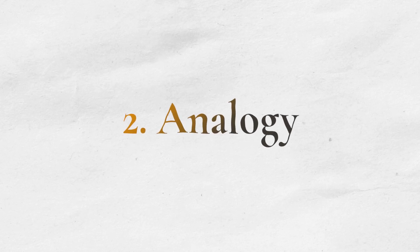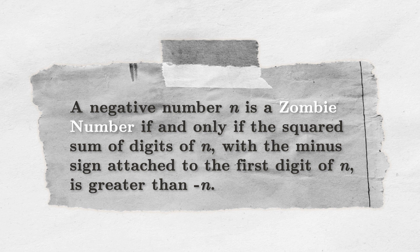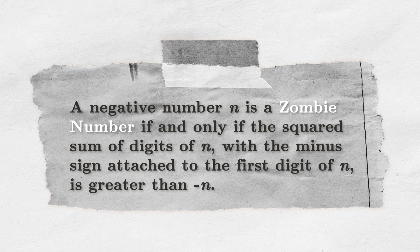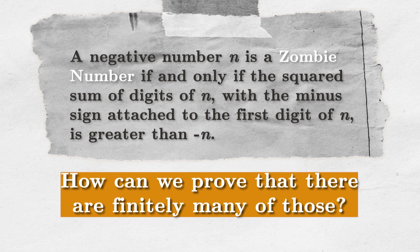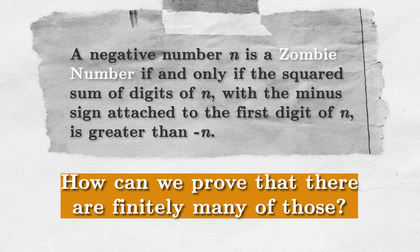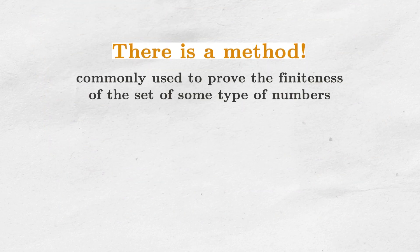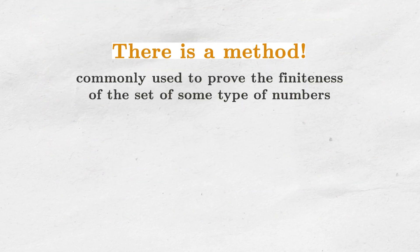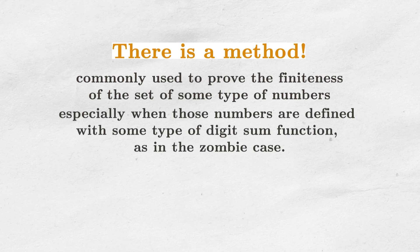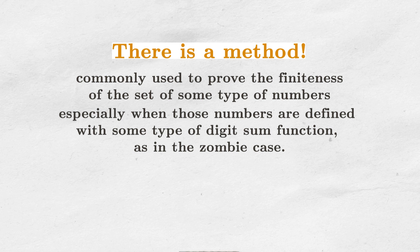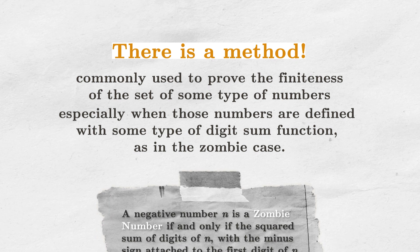We are facing a problem of proving that there are only finitely many numbers of some kind, in this case the zombie kind, which definition is now visible on the screen. It might not be clear how we can do it because it's not a very standard problem one faces in number theory. Nonetheless, there is one ingenious method that is commonly used to prove the finiteness of the set of some type of numbers, especially when those numbers are defined with some type of digit sum function, as in the zombie case.